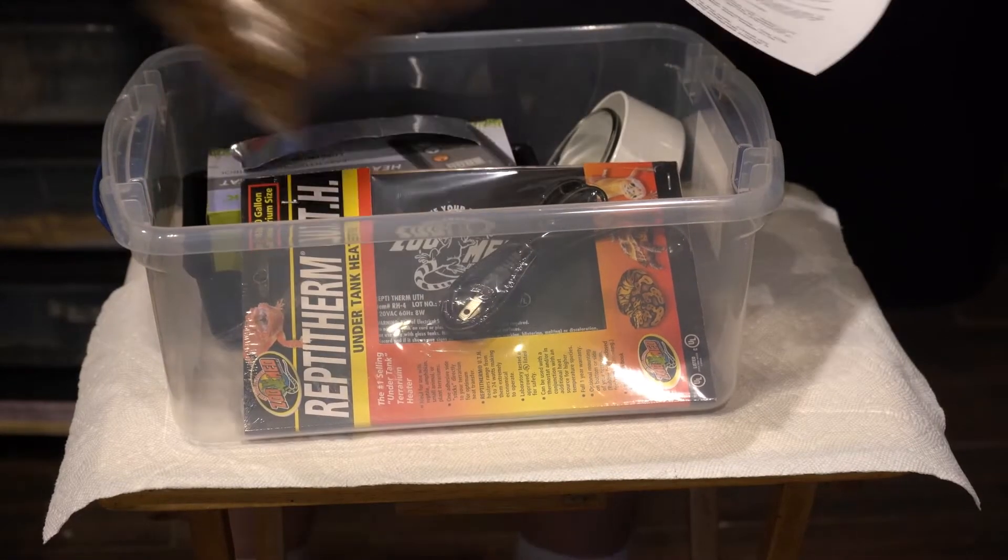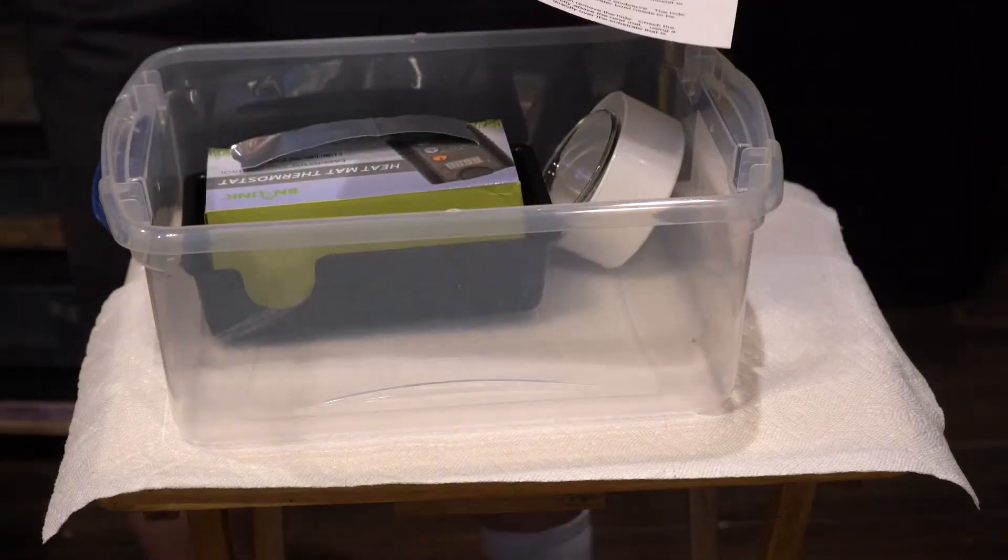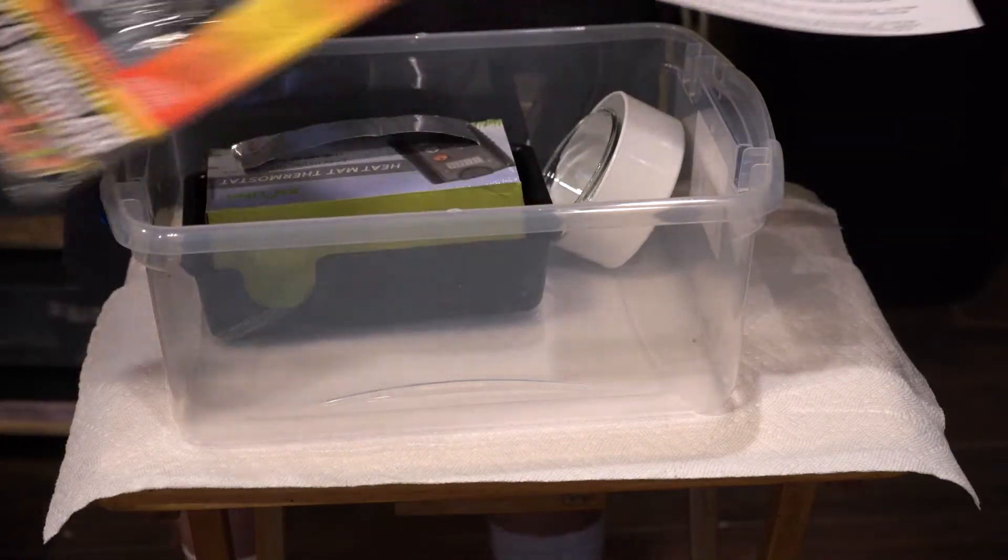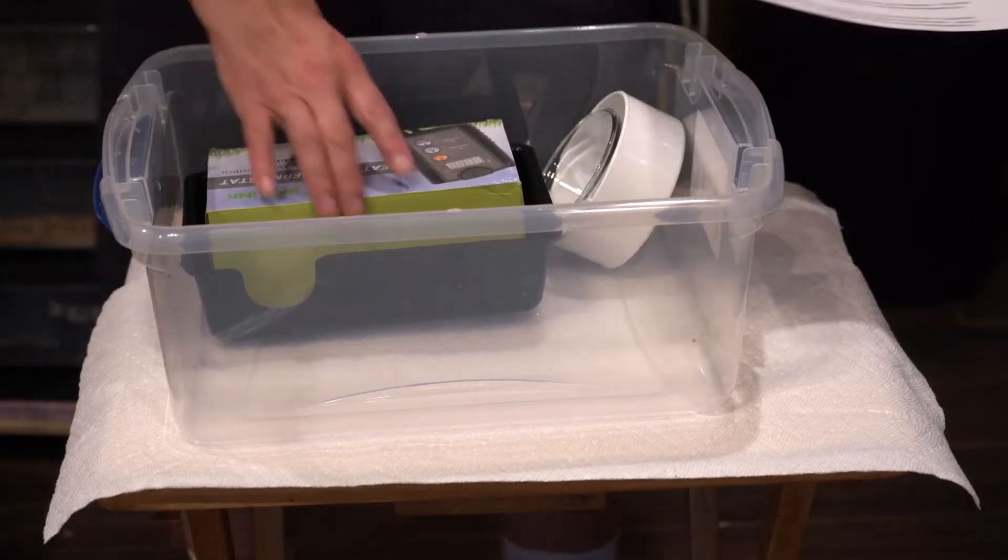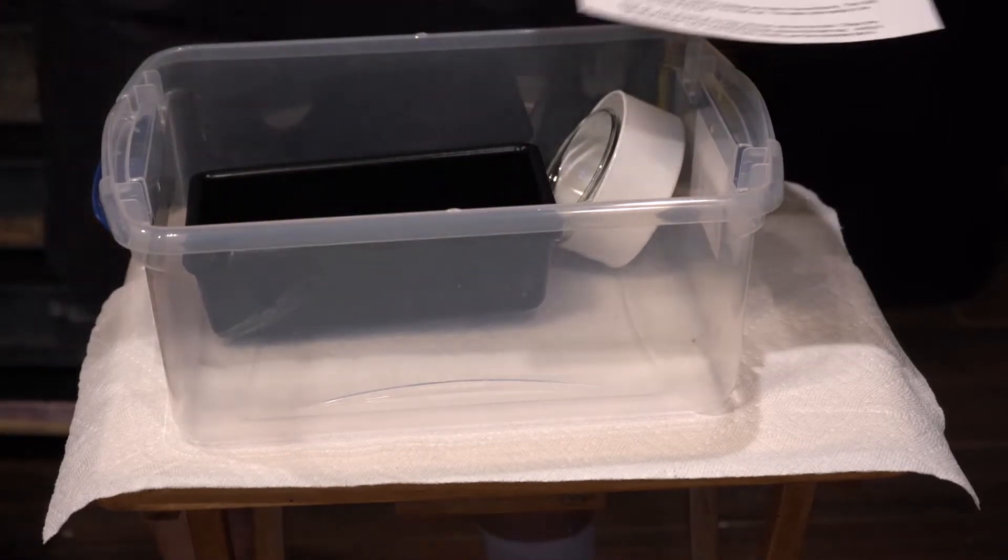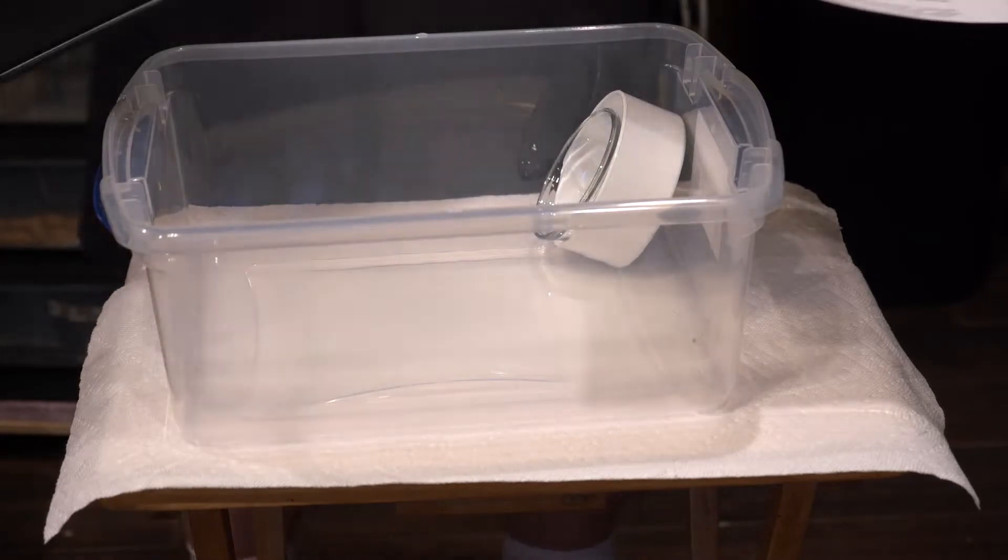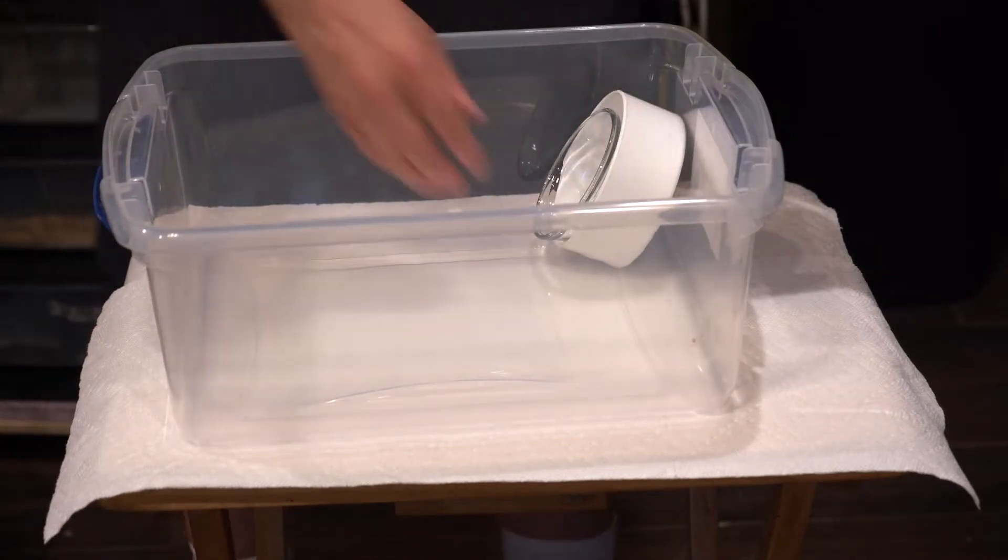You should have gotten some bedding, a heat mat, whether it could be this size or the bigger one if you got the bigger enclosure. You should have gotten some foil tape, a thermostat, and a hide, whether it be the medium hide or the small hide.